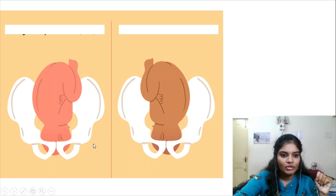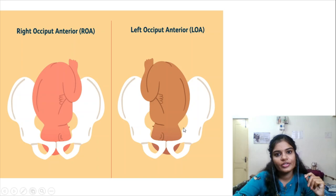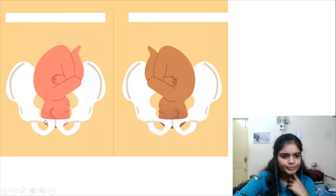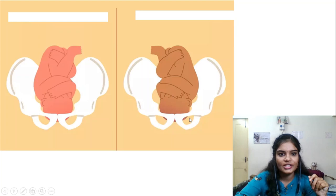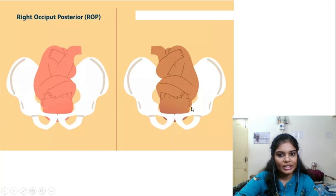Looking at the question image: the occiput is facing towards the pubic symphysis — occiput anterior. Since it is towards the maternal right, it is right occiput anterior. If towards maternal left, left occiput anterior. If the occiput is in transverse position towards the right, it is right occiput transverse; towards the left, left occiput transverse. If the occiput is behind towards the sacrum and towards the right, it is right occiput posterior; towards the left, left occiput posterior.